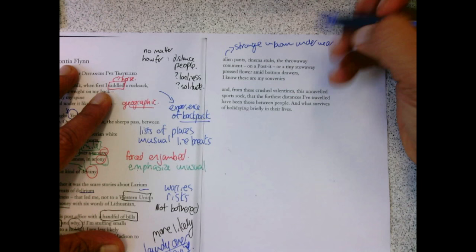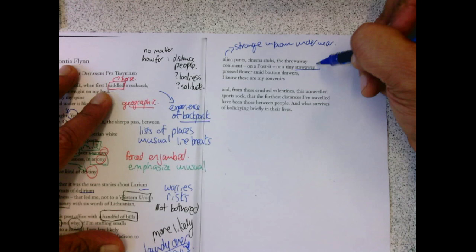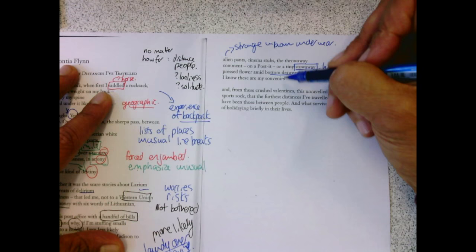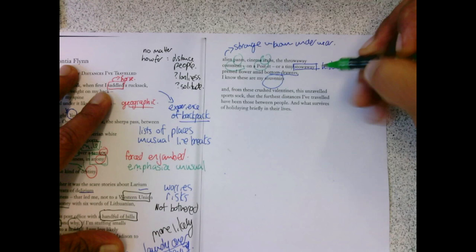Or a tiny stowaway. So she herself has become the vessel for travel. And what's stowed away or hidden on her are flowers in the bottom drawers. And these are her souvenirs, her remembrances. Pants, stubs, post-its.